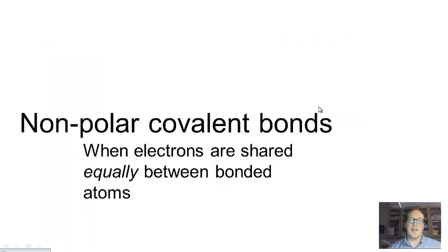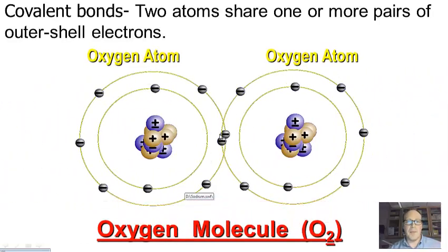Covalent bonds are actually subclassified into polar covalent bonds and nonpolar covalent bonds. Nonpolar covalent bonds are when electrons are shared equally between bonded atoms, whereas polar covalent bonds is the result of electrons being shared unequally. Here are our oxygen atoms sharing a pair of electrons. Two oxygen atoms together is an oxygen molecule. You see how these valence levels are literally intersecting? That's really what we're talking about when we've got covalence going on.